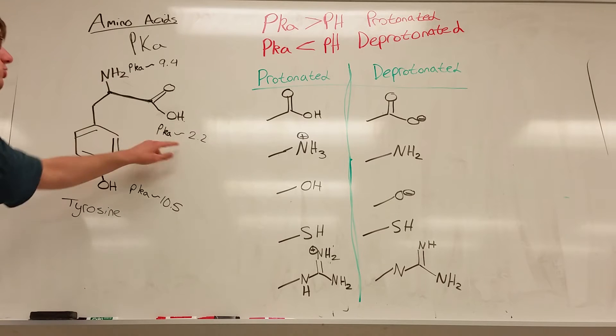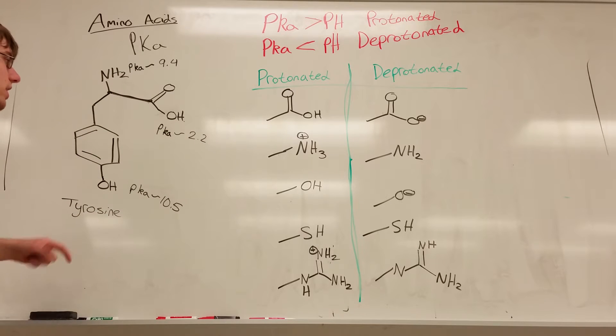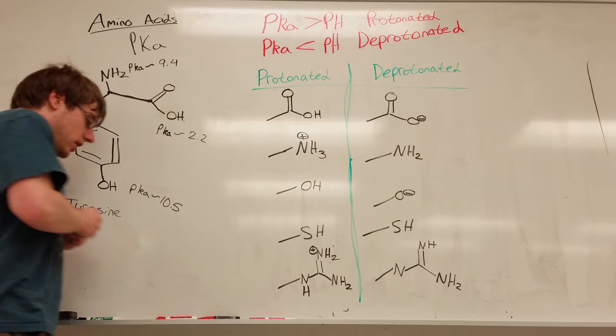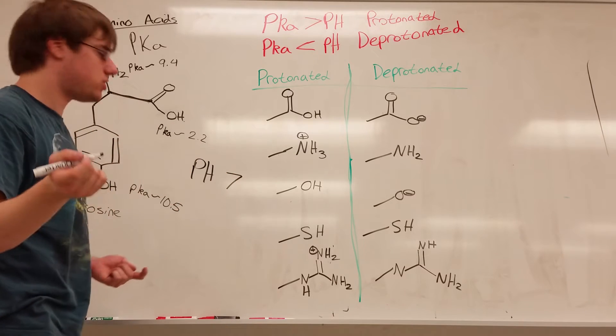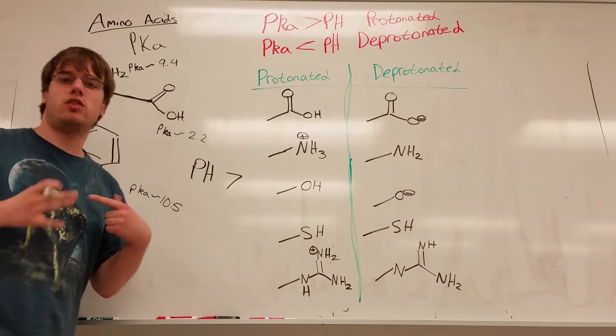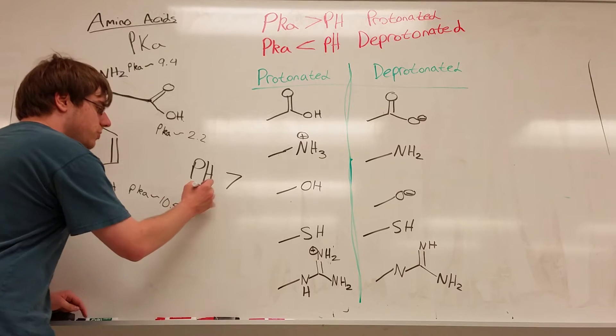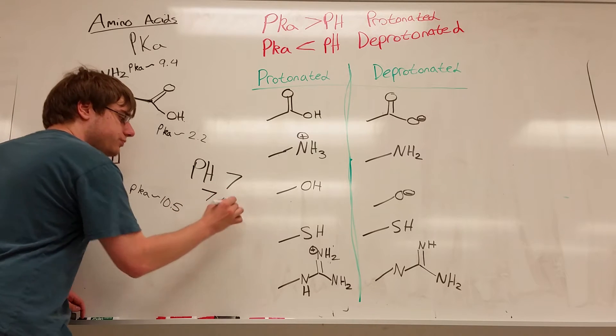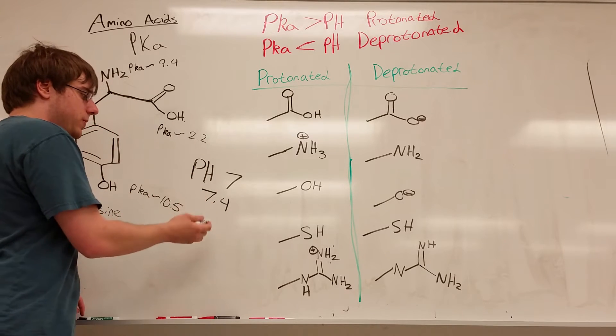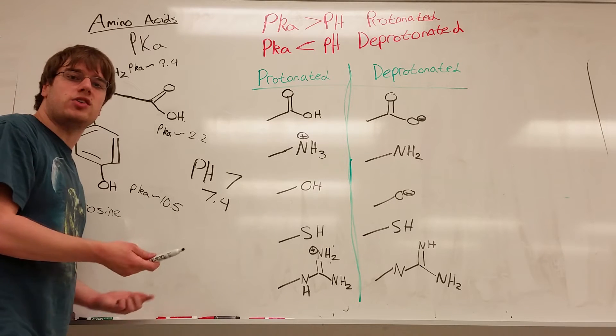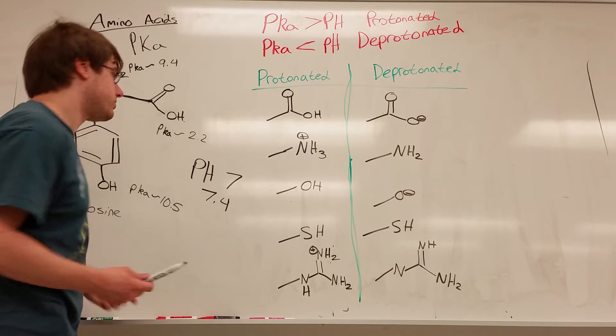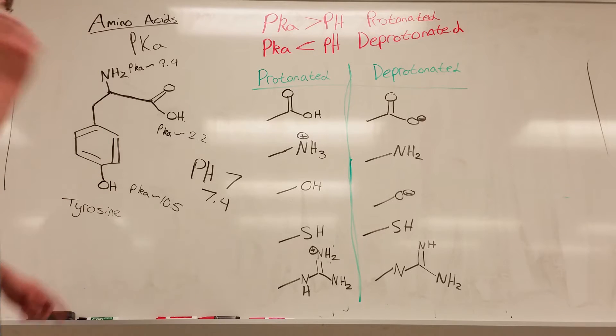So now we're given three individual pKas for the three different functional groups of this structure, and we're asked, what does this structure look like if we put it into a solution with a pH of 7, a neutral pH? And sometimes you'll hear the word physiological pH. Physiological pH just means 7.4. But for our purposes and pretty much every question you are asked, physiological pH or neutral pH, they kind of end up giving you the same result.